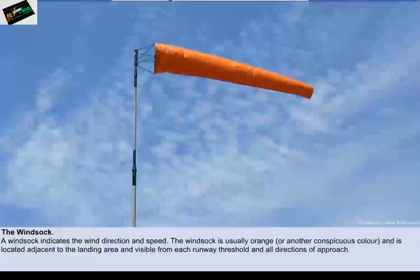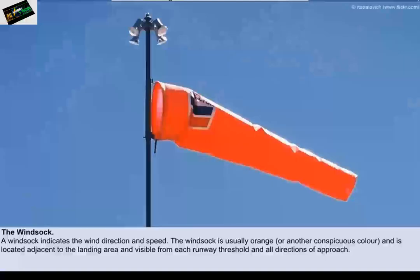The last of the aerodrome visual signals to examine is the wind sock. The wind sock indicates the wind direction and speed. It is usually coloured international orange to ensure it is visible, is located adjacent to the landing areas, and is visible from each runway threshold and in all directions of approach. It is usually lit so that it is visible at night.